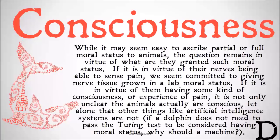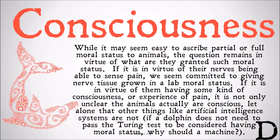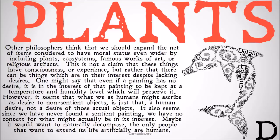There are interesting questions in philosophy of mind that come in very importantly when talking about what we can really ascribe moral status to. So if you think that animals have moral status in themselves — not just derivative moral status — why do you think that? In virtue of what about that animal gives it that? Do all animals have that? Some animals are not as smart as others. Is intelligence factored in, or does intelligence actually map onto something like consciousness? Other philosophers think we should expand the net of items considered to have moral status wider by including things like plants, ecosystems, famous works of art, or religious artifacts.